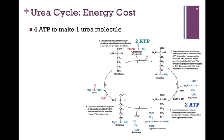Let's consider the cost of running the cycle. It costs two ATP molecules for every molecule of carbamoyl phosphate and two ATPs for every aspartate, so it costs us four ATP molecules to make one urea molecule. Clearly an expensive process, yet we gain the production of a molecule we can excrete as waste without building up that toxic ammonia compound.